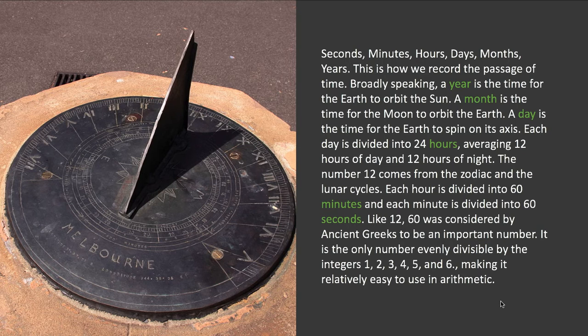From there, we subdivide days into smaller and smaller increments based on numbers that early astronomers found to be very important or useful. We take a day and divide it into 24 hours — that's two 12-hour blocks, 12 for day and 12 for night. That number 12 comes from our studies of the constellations and the moon. There are about 12 lunar cycles, 12 months in a year, and 12 recognized official zodiac signs — there are actually 13, but 12 are officially recognized. So that number 12 was important, and breaking the day into two 12-hour blocks has turned out to be very useful.